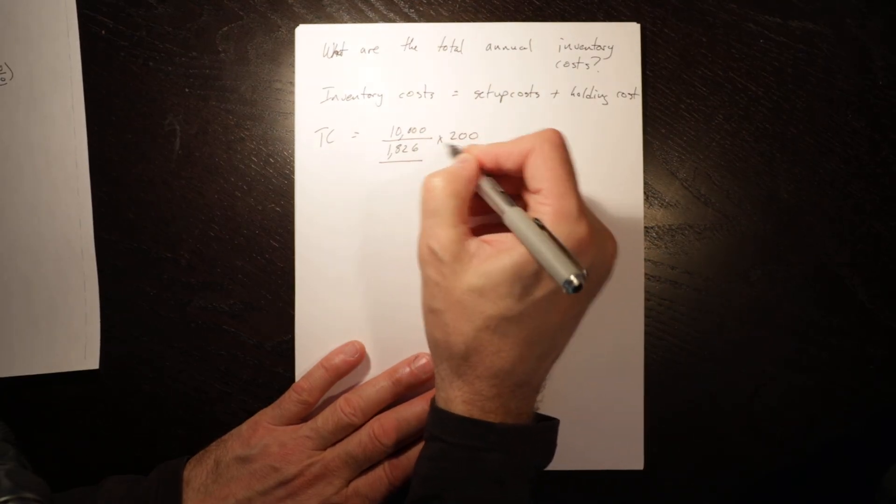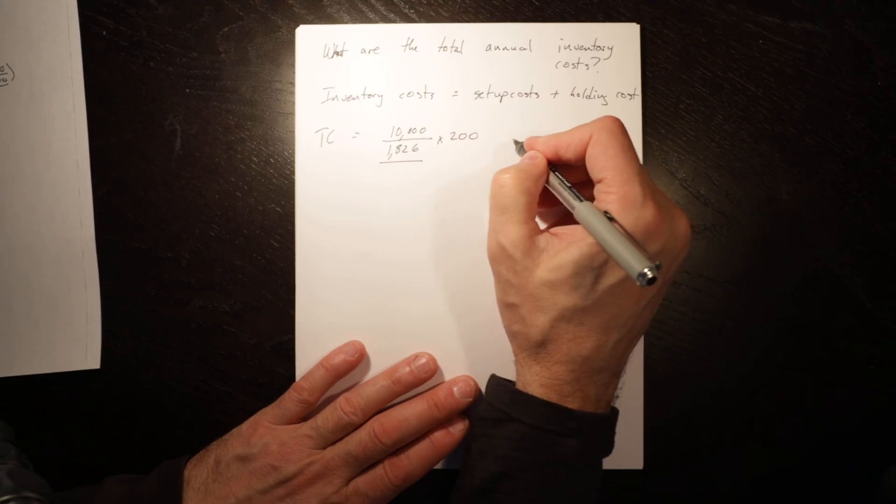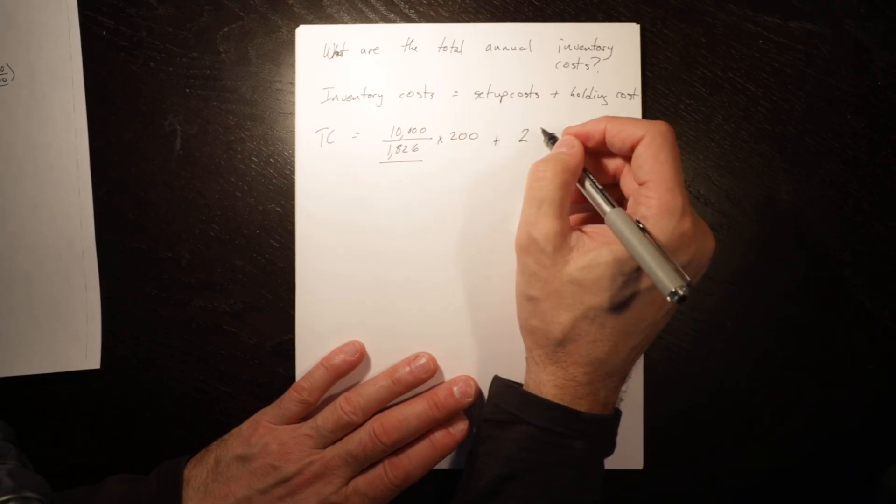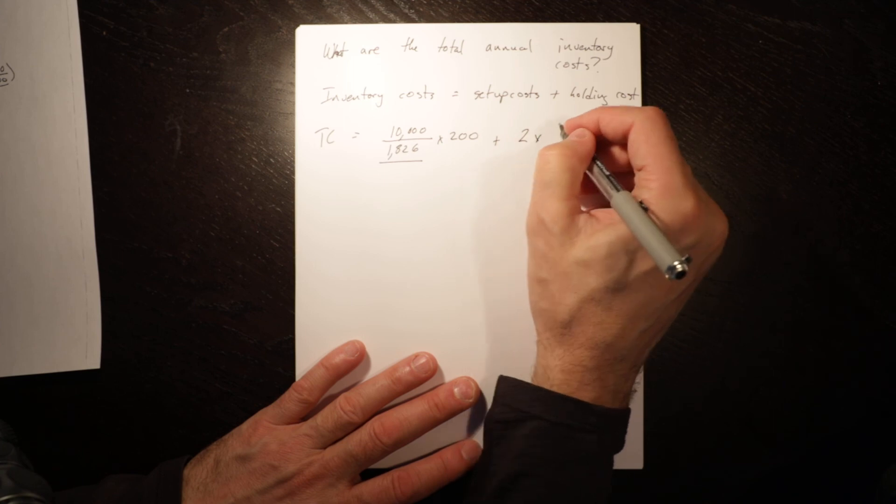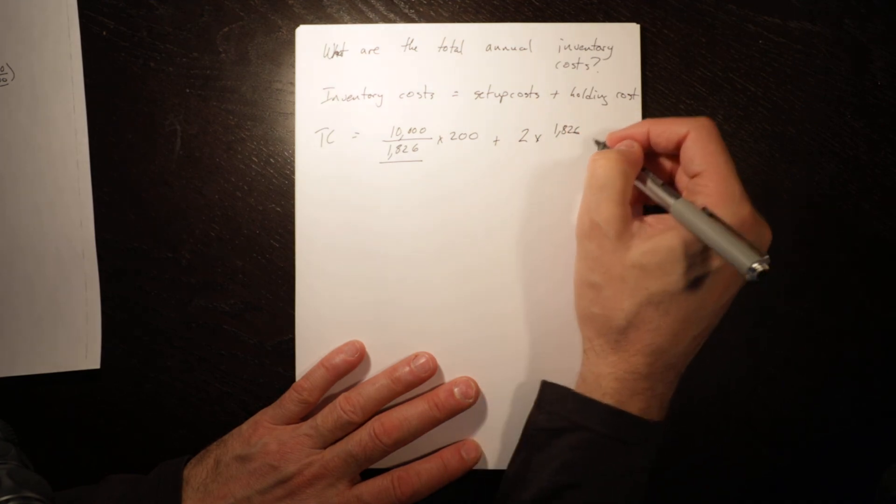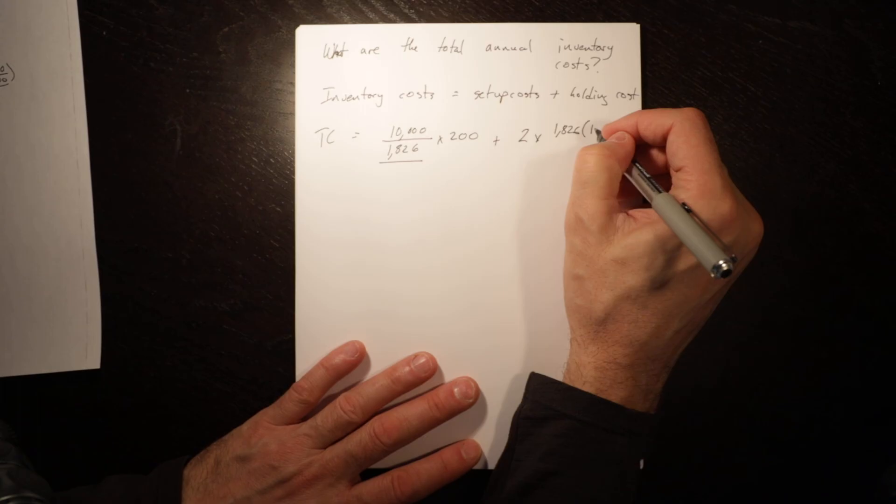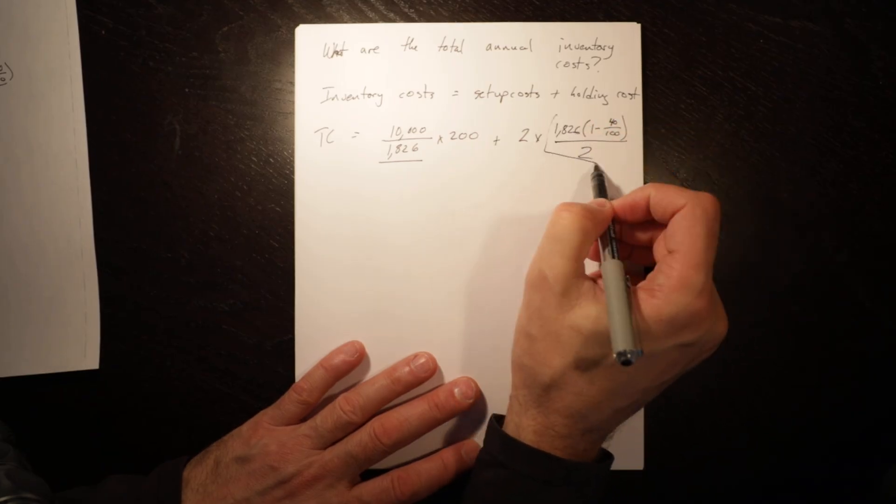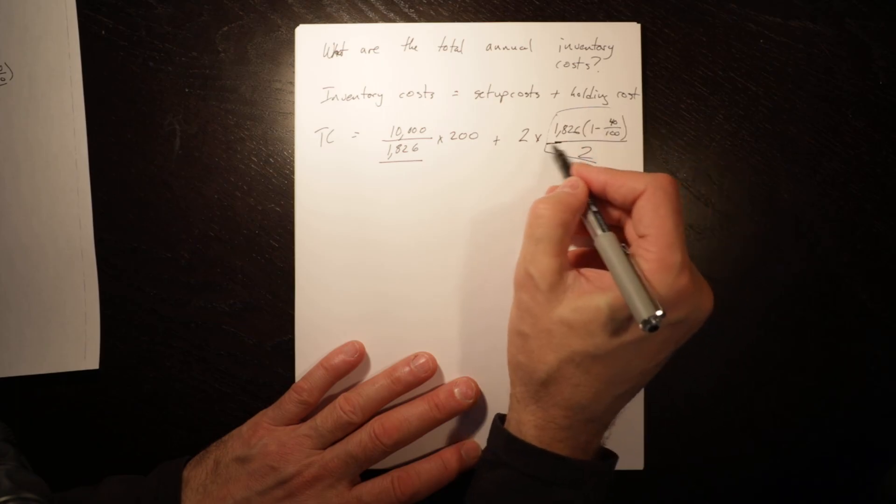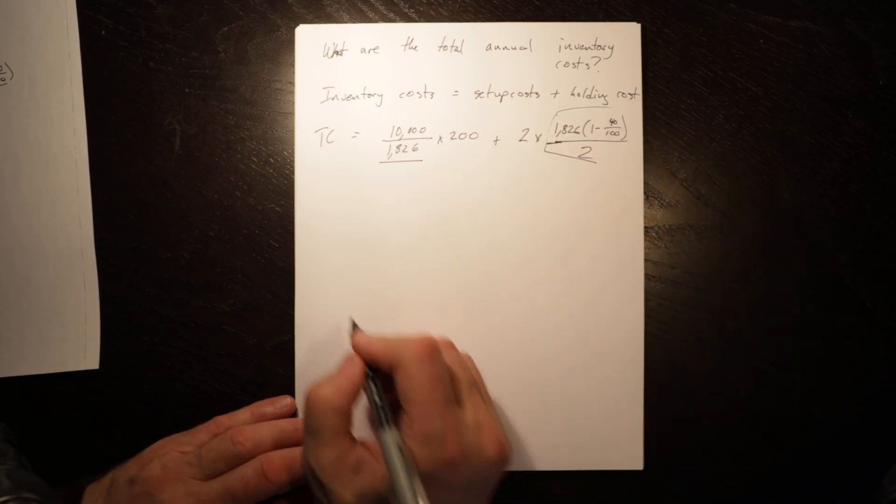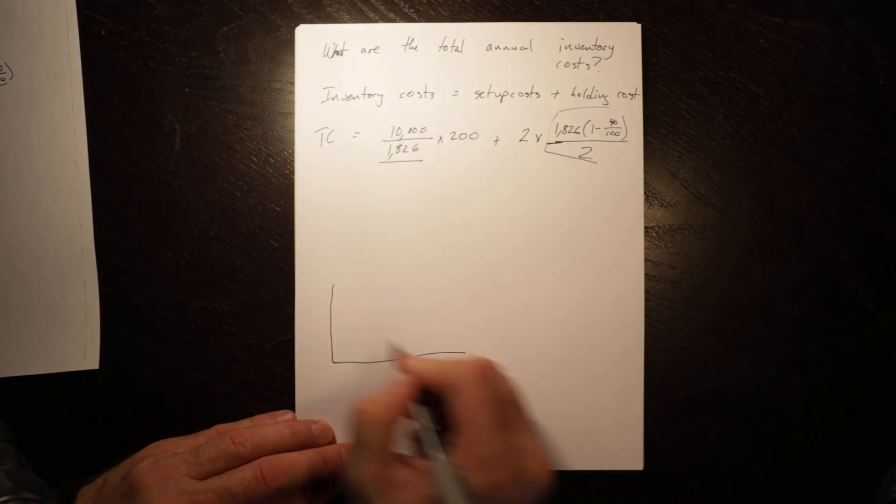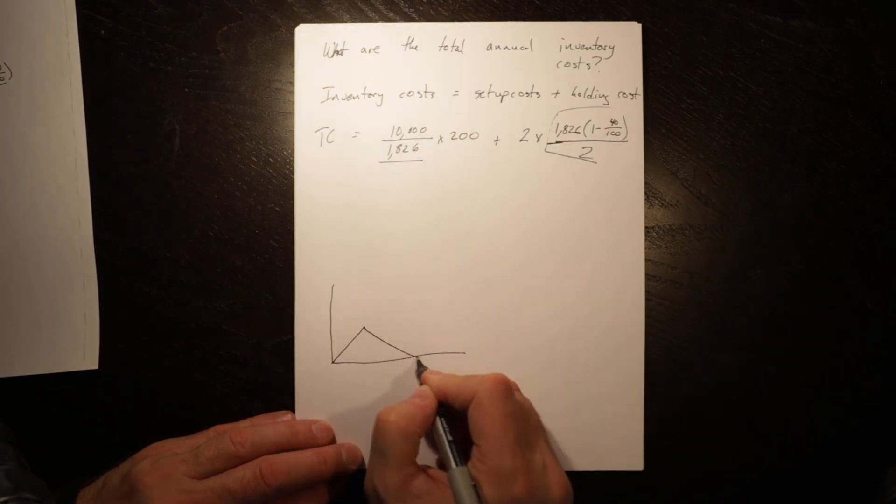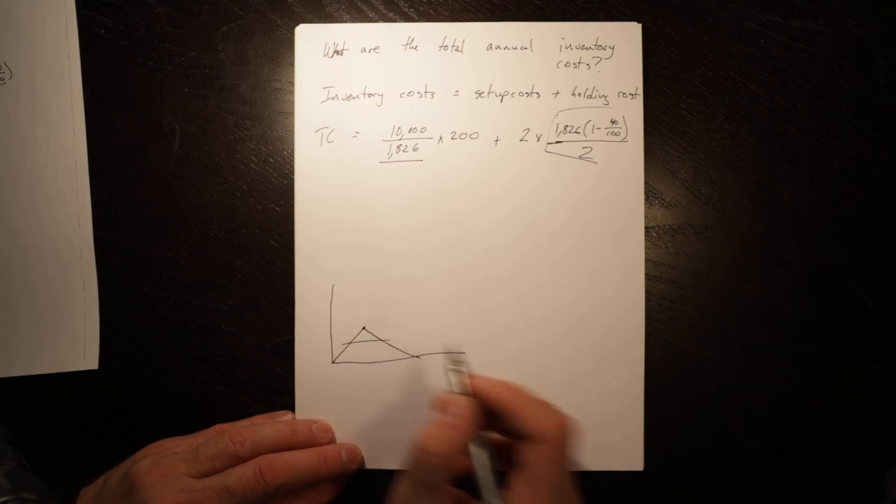So this is the number of orders per year, this is the setup cost, plus 2, which is the holding costs, times 18.26, which is what we produce, times 1 minus 40 over 100, right? So over 2. This is max inventory. We divide it by 2 because we produce and then we use it up, and so our average is halfway.